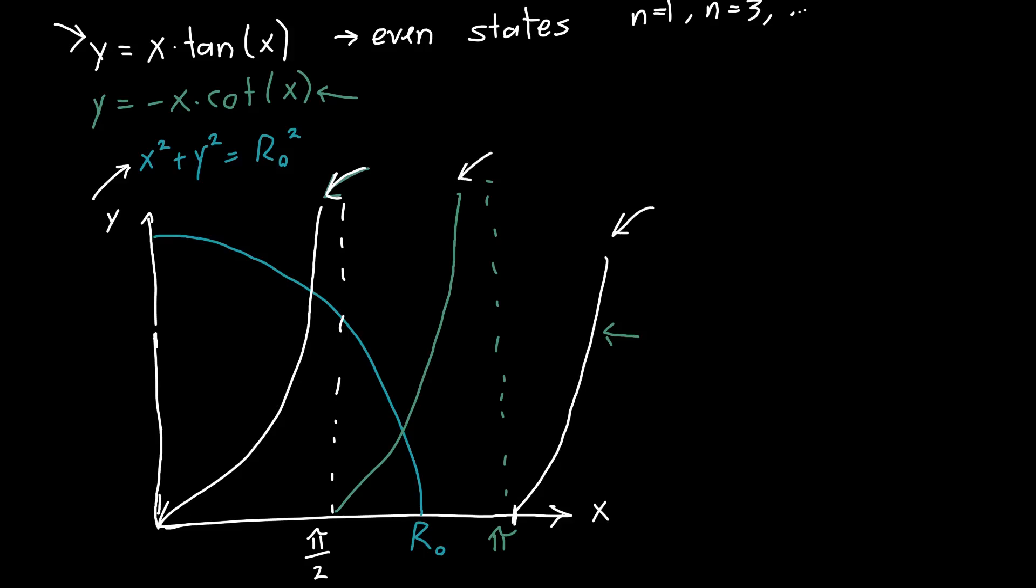And so if you want to know for example how many states a quantum well supports, you do actually care about both the even states and the odd states. And so you need to consider okay where are all the points where this circle intersects one of these curves. Where it intersects these white curves we've got an even solution, where it intersects these green curves we've got an odd solution or a sinusoidal solution.